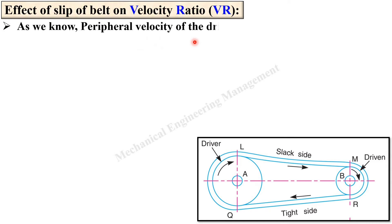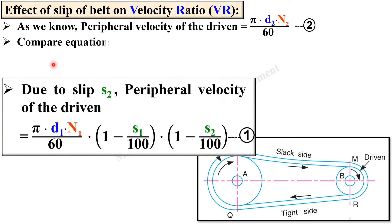Now, the peripheral velocity of the driven shaft is also equal to π·D2·N2 / 60, since this is the driven pulley, that is why it is D2 and N2. Let us call this equation number 2. Now we compare equation 1, which we derived by considering slip S1 and S2, with equation 2, because both represent the peripheral velocity of the driven pulley. So we can equate these two equations.